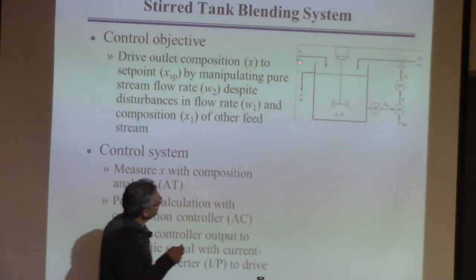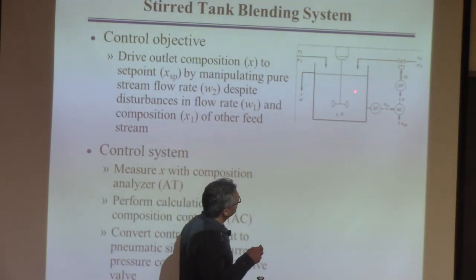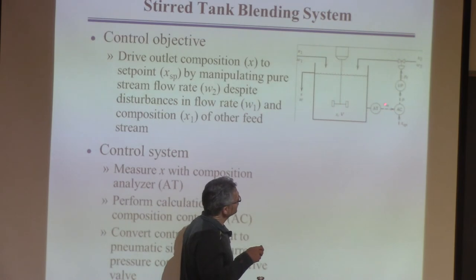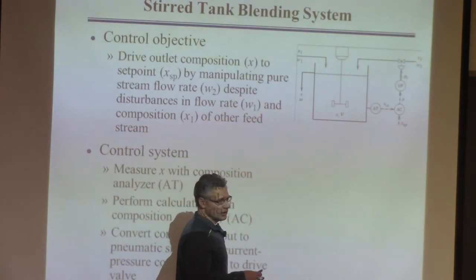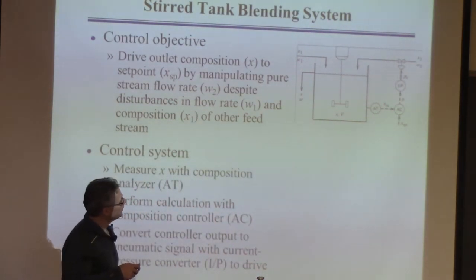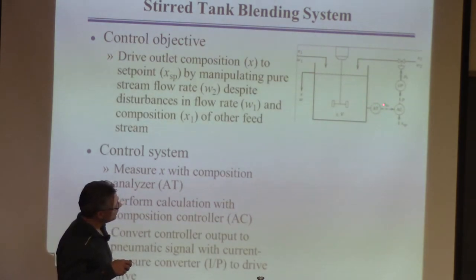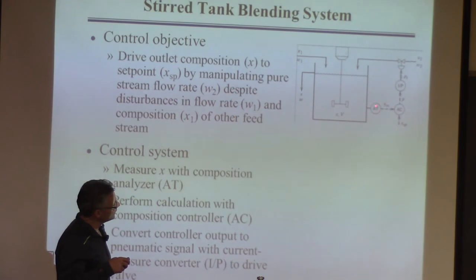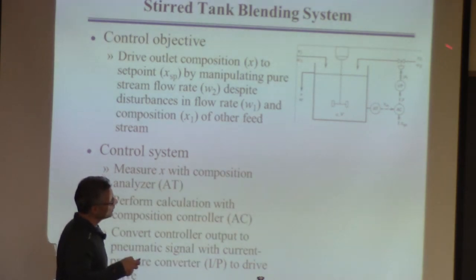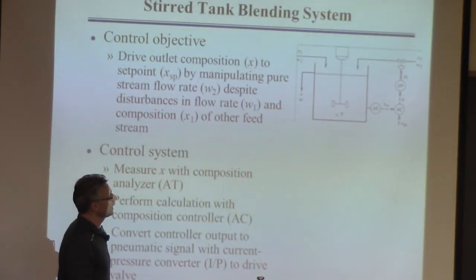When we talk about G — the process transfer function — we're talking about how this flow affects the composition. That's the G. The closed-loop transfer function is going to involve G, but it's also going to involve these other elements that weren't there until we talked about control: the sensor, the controller, the converter, the valve. All that together with the process is what we call the closed-loop system.